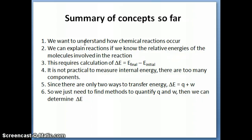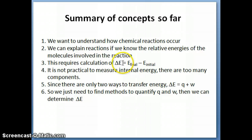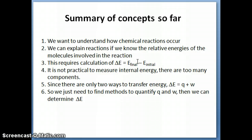Energy is a component of chemical reactions — you cannot separate energy from a chemical reaction; it's part of it. Everything that happens has an energy component. In order to understand chemical reactions, we have to understand the energy that accompanies them. If we can measure the energies of molecules involved, we can explain and predict what's going to happen. To do this, we calculate delta E — the change in energy — by taking the final energy of the system minus the initial energy. The system here refers to the reactants and products.